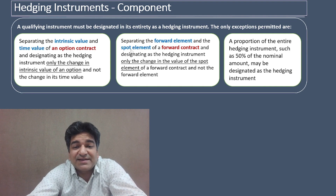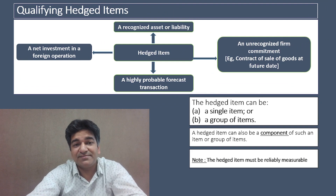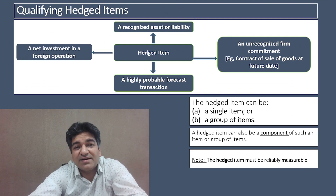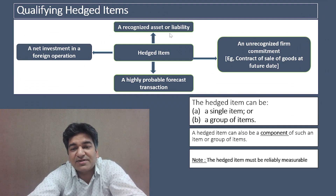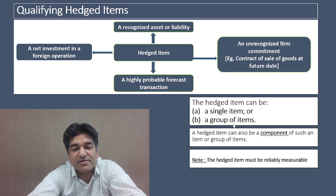Let us have a quick recap. A hedged item can be a recognized asset or liability, an unrecognized firm commitment, a highly probable forecast transaction, or a net investment in a foreign operation. A hedged item can be a single item or a group of items, and it can also be a component of such a single item or a group of items.